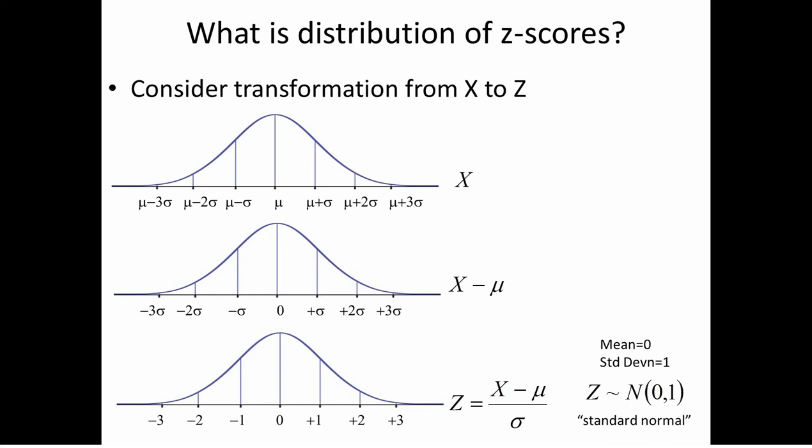Why is it called the standard normal? A standard is something that everything is compared to — like saying Michael Jordan is the standard to which all basketball players are compared. The standard normal takes any normal random variable and puts it in the same form. This is what lets us compare different normal distributions, just as we compared salaries from Tokyo and Cleveland. Every normal distribution is transformed to the standard normal — it's the one that everyone is put in terms of.